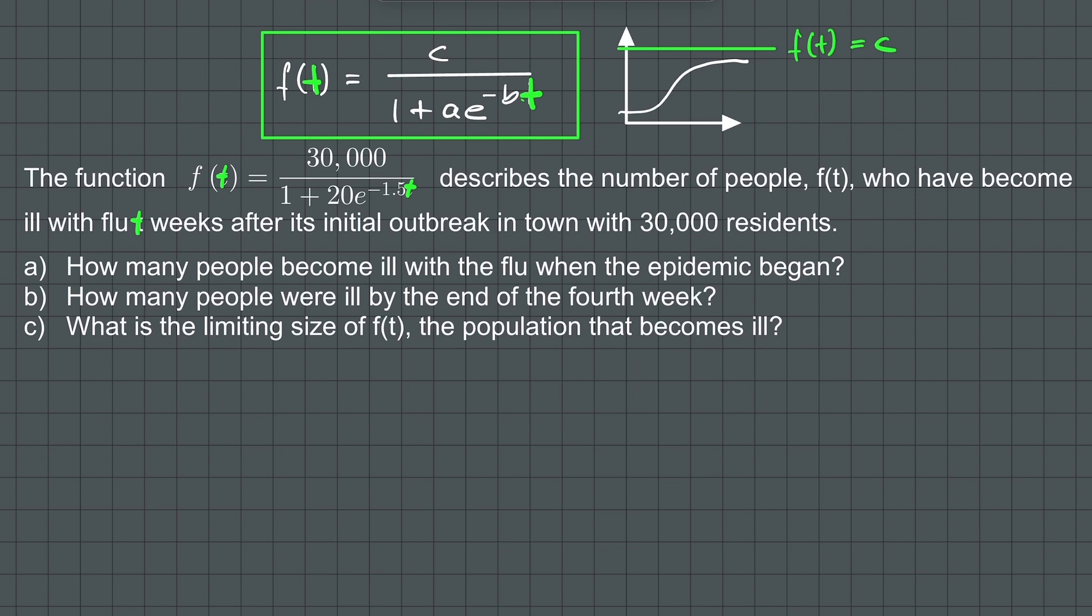How many people become ill with the flu when the epidemic began? The given logistic growth function is f(t) equals 30,000 over 1 plus 20 times e raised to the power of negative 1.5 times t.